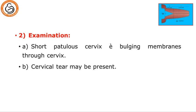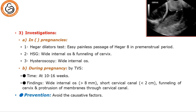For examination: we find a short patulous cervix with bulging membranes through the cervical os; a cervical tear may be present. Investigations in between pregnancies: a test using a Hegar dilator — if Hegar 8 passes without pain, it means the cervix is patulous. Hysterosalpingogram sometimes shows wide internal os with funneling of the cervix; hysteroscopy is admitted easily without any dilatation. During pregnancy: evaluation of the cervix at the 10th to 16th week shows wide internal os of more than 8 mm, short cervix less than 2 cm, funneling of the cervix with protrusion of membranes through the cervical canal. For prevention: avoid causative factors, especially traumatic vaginal delivery, and properly repair cervical tears.